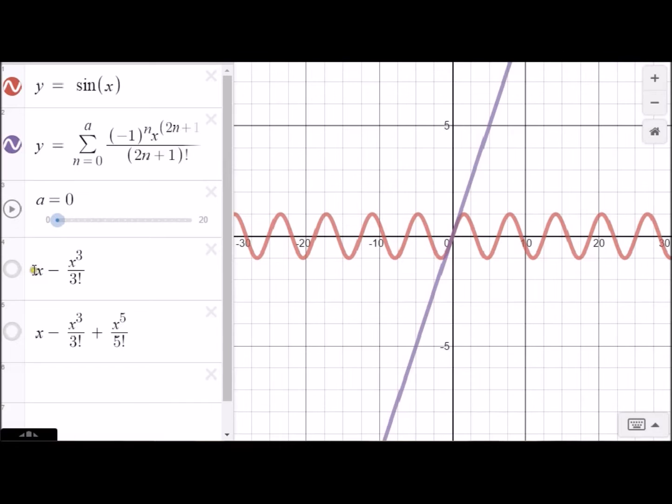Let's look at the first two terms. We said you could approximate sine x with x minus x to the third over three factorial. There's going to be the graph of x minus x to the third over three factorial. So that's certainly a better approximation.